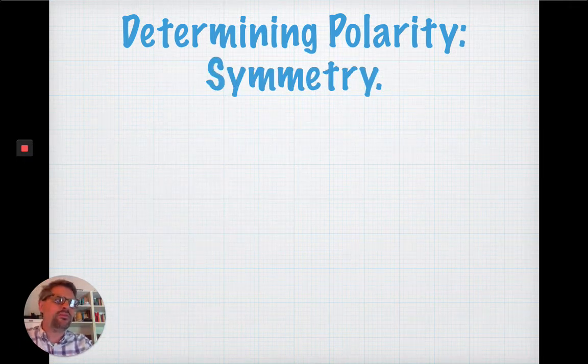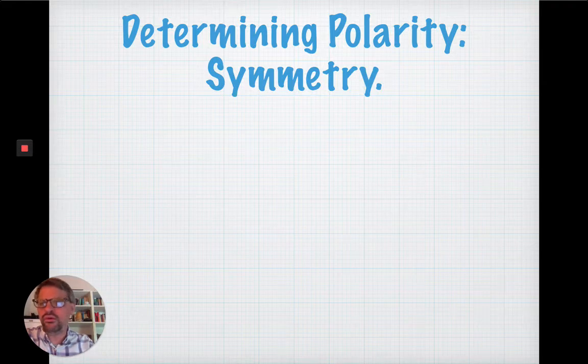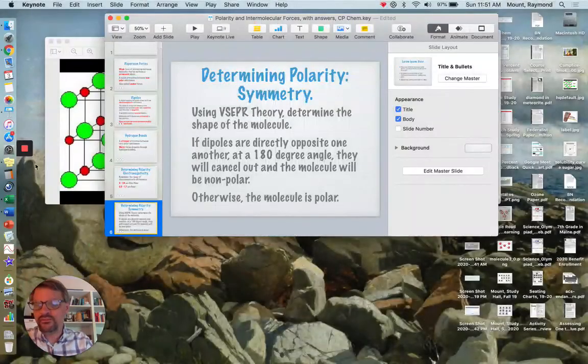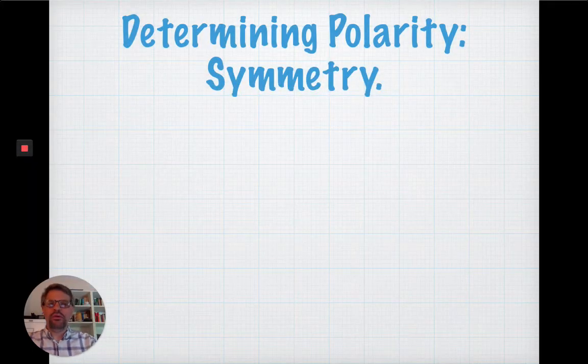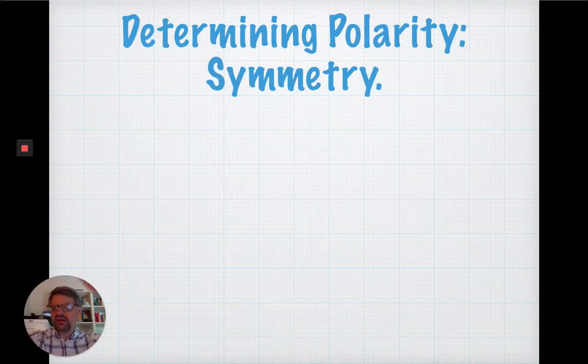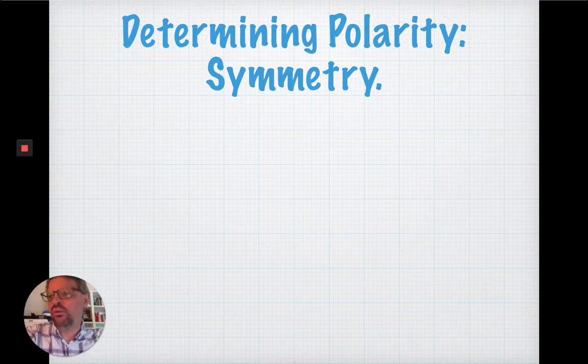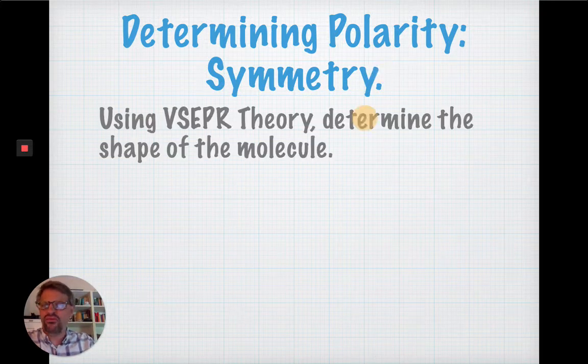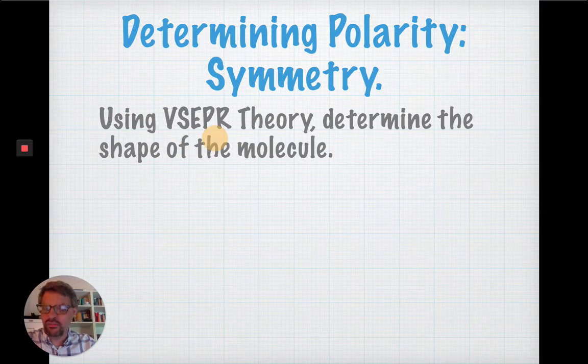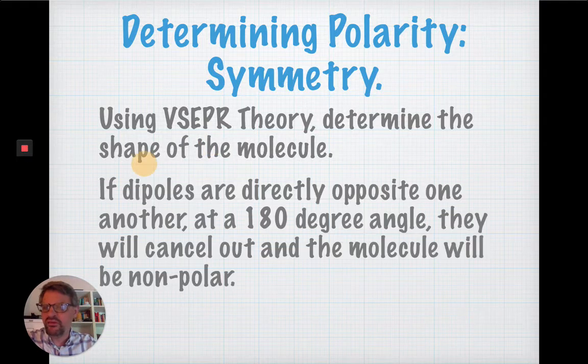Now, the other thing that determines if a molecule is polar or not. So, polarity and the difference in electronegativity will tell you if a molecule is polar or not. The other thing you have to consider is symmetry, the arrangement, the shape of the molecule. And this is where VSEPR theory comes into play. So, you have to determine the shape of the molecule.